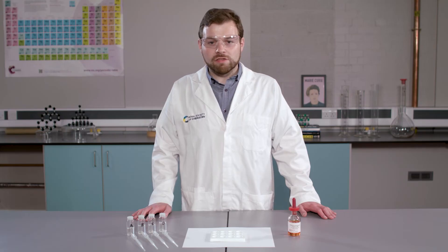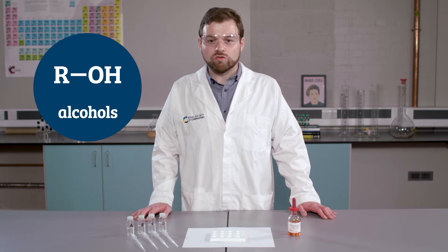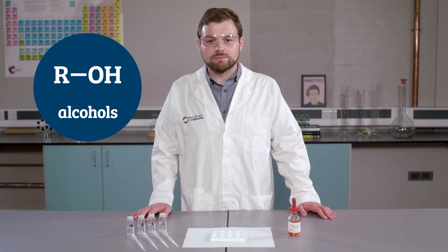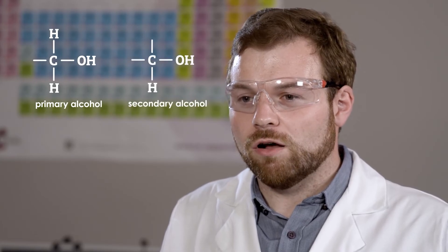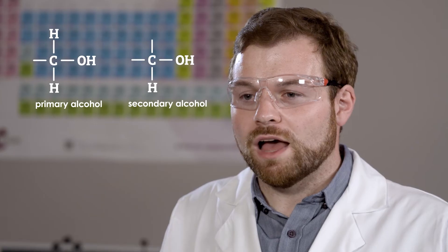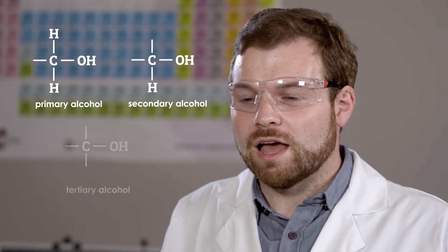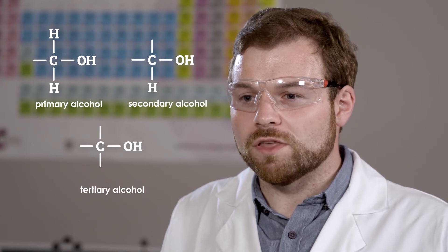Now I am going to test for the presence of an alcohol or OH functional group. Alcohols can exist as several different isomers, depending on where the OH group lies on the chain of carbon atoms. They are classified as either primary, secondary or tertiary alcohols. In a primary alcohol, the carbon with the OH group has either 2 or 3 hydrogen atoms attached. In a secondary alcohol, the carbon atom with the OH group has 1 hydrogen atom attached. And in a tertiary alcohol, there are no hydrogen atoms attached to the carbon with the OH group.